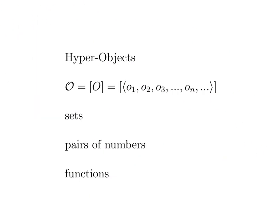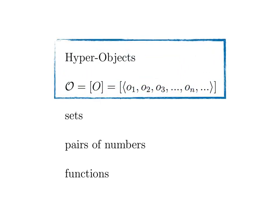The construction process of hyperreal numbers can be applied to various objects. To construct a hyperobject, we build all equivalence classes associated to a sequence of objects. In this way, we can construct a hyper-set, hyper-pairs, or hyper-functions.